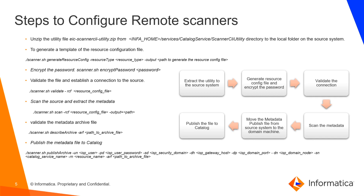Coming to the steps to configure remote scanners: first, extract the scanner utility from the domain machine to the source system. Once extracted, generate a resource config file and then encrypt the password — we can't use the regular password, it must be encrypted before running the remote scanner. Once steps 1 and 2 are configured, validate the connection by doing a test connection of the resource config file. Then use the metadata archive command to extract the metadata, move the metadata file from the source system back to the domain machine, and finally publish the file into the catalog.